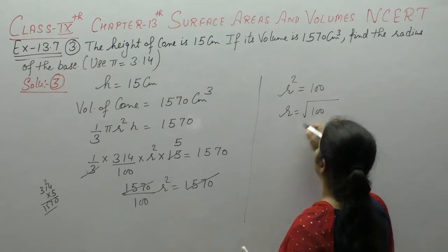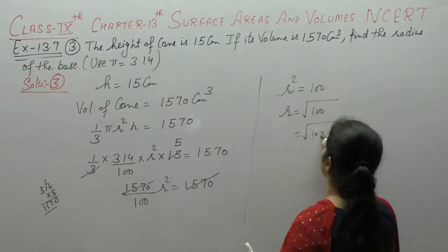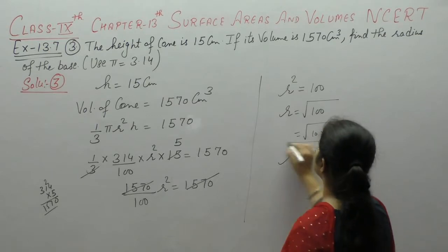So radius is square root of 100, 10 into 10, so radius humarhe paas aya, 10 cm.